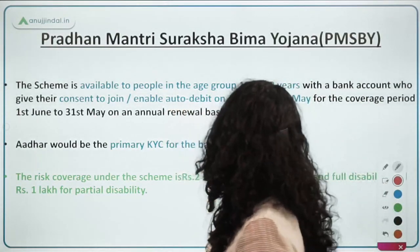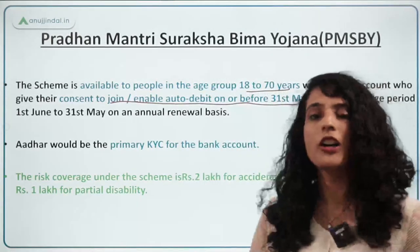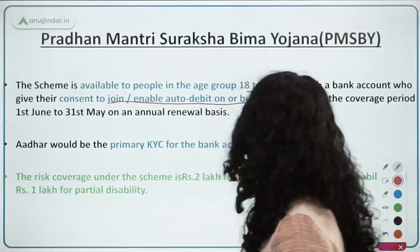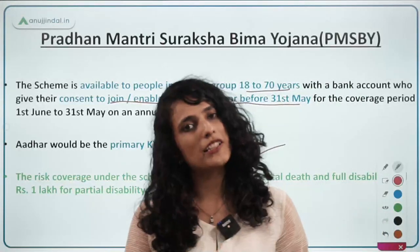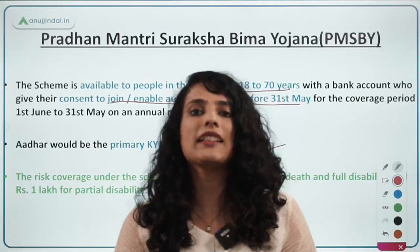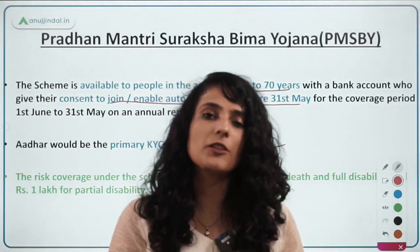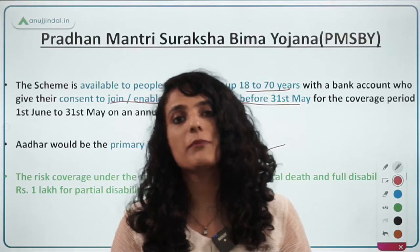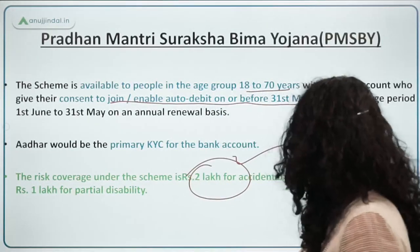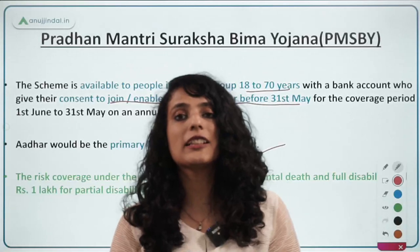Pradhan Mantri Suraksha Bima Yojana — the scheme is available to people in the age group of 18 to 70 years with a bank account who give their consent to join and enable auto-debit on or before 31st of May, along with Aadhaar-enabled KYC. The premium under Suraksha Bima Yojana has been increased from rupees 12 per annum to rupees 20 per annum, as we covered in yesterday's video. The risk coverage is rupees 2 lakh for accidental death and full disability.